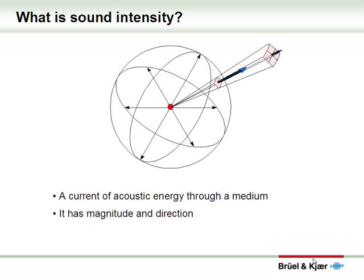In the center of this picture you'll see a red dot — that's a sound source. It's a point source which means that it radiates energy equally in all directions. Somewhere out in the field you'll get a sound pressure — those are the pink squares. As the sound travels from the source to the receiver, it passes through the medium. That's a current of acoustic energy — those are the blue arrows. That is sound intensity, and sound intensity has a magnitude and direction.